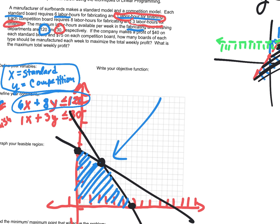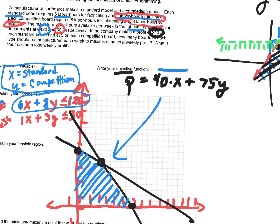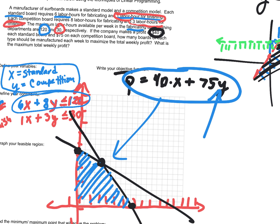If you had to write an equation like this — like I gave you for the dimes and quarters — that's part of your test. This whole thing: graphing, finding the corner points — those corners are called the optimizing corners. That's where you optimize your equation. If you can do all of that, that's extra credit.